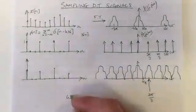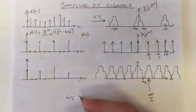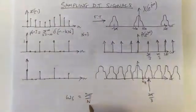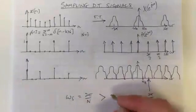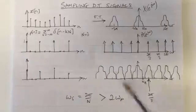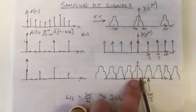So in general, if Ws equals 2π/n, if that is bigger than twice the maximum frequency component of your signal, then you will be able to recover, because these will not overlap.